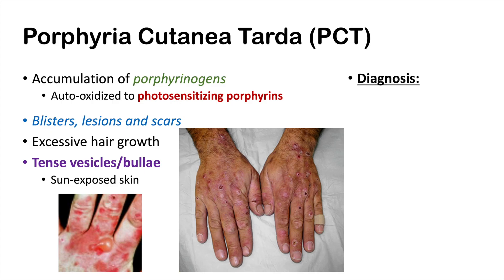The diagnosis of porphyria cutanea tarda is an important one to recognize. Diagnosis involves looking at the urine of an individual suspected of having PCT using 5% HCl and a Wood's lamp. Looking at their urine under a Wood's lamp allows you to visualize the porphyrins.